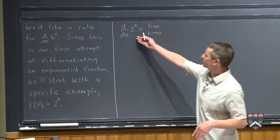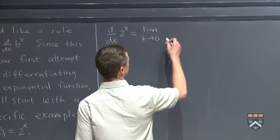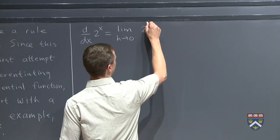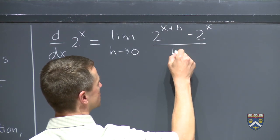So we want to take the derivative of 2 to the x. We can always fall back on our limit definition. So we're taking f of x plus h, which is 2 raised to the x plus h, minus 2 to the x, all over h.